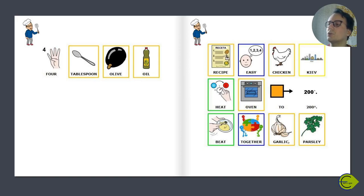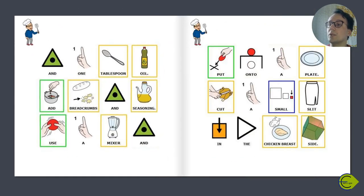Heat oven to 200 degrees. Beat together garlic, parsley, and 1 tablespoon oil. Add breadcrumbs and seasoning. Use a mixer and put onto a plate. Cut a small